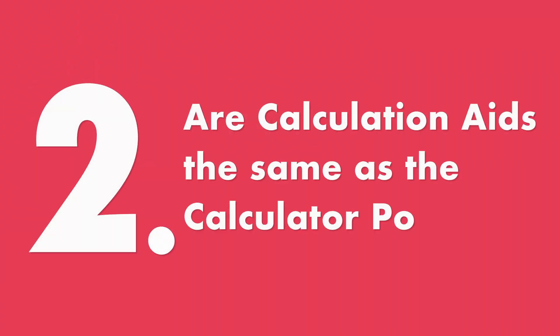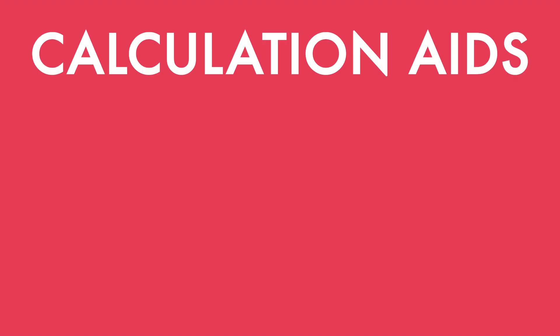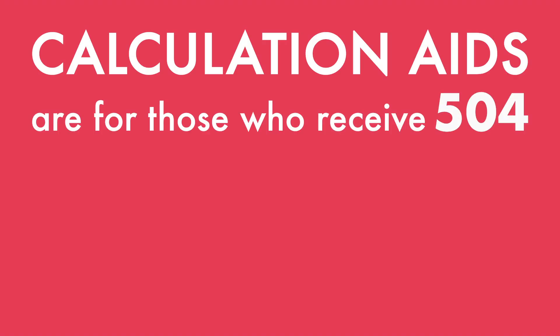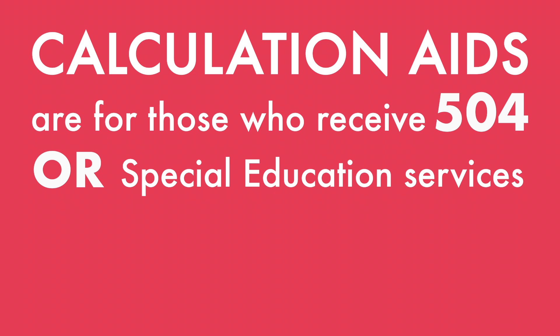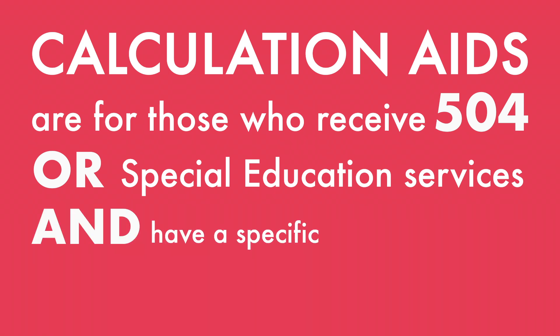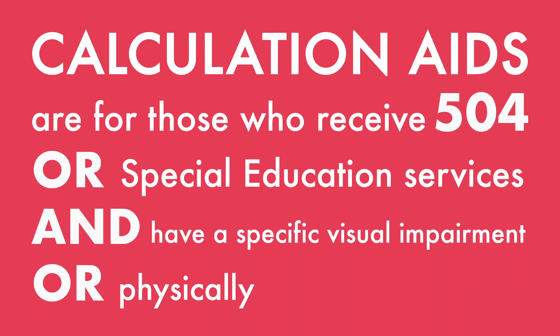Question number two: are calculation aids the same as the calculator policy? No, they are not. They address different tests. Calculation aids apply to students taking third through seventh grade math, or fifth grade science, but it is not for all students. This gets a little complicated, so stick with me. Calculation aids are for those who receive 504 or special education services and have a specific visual impairment or physically disabling condition. Fifth through seventh graders may qualify if they have a math disability.